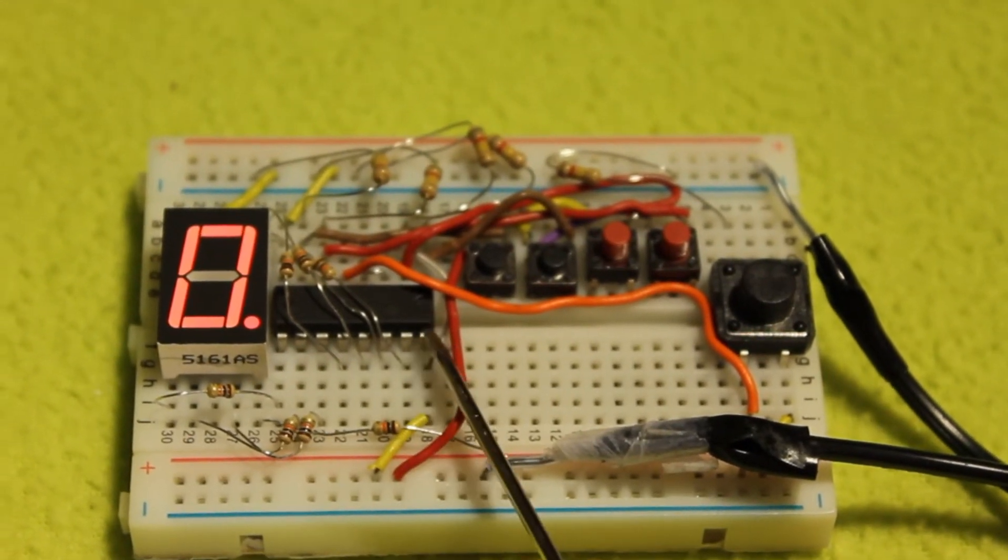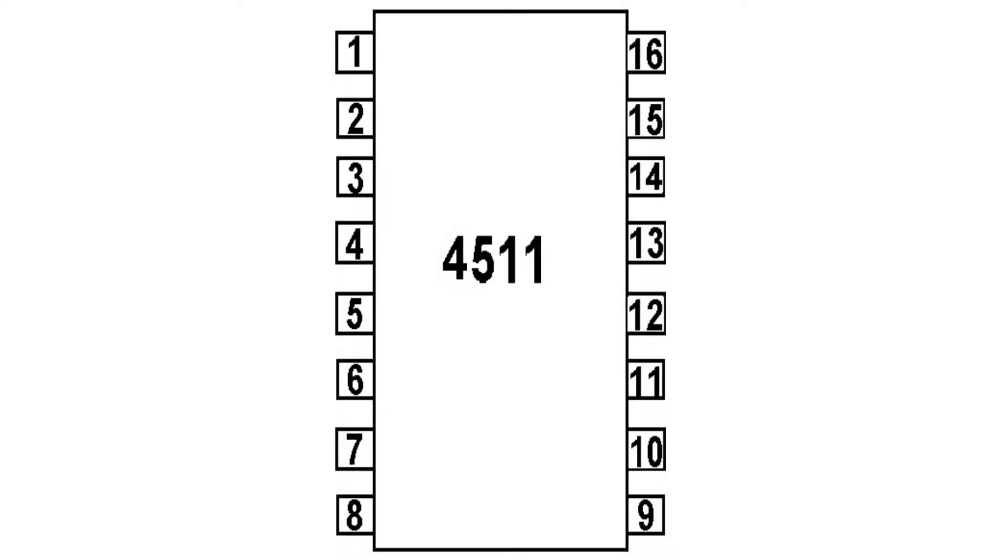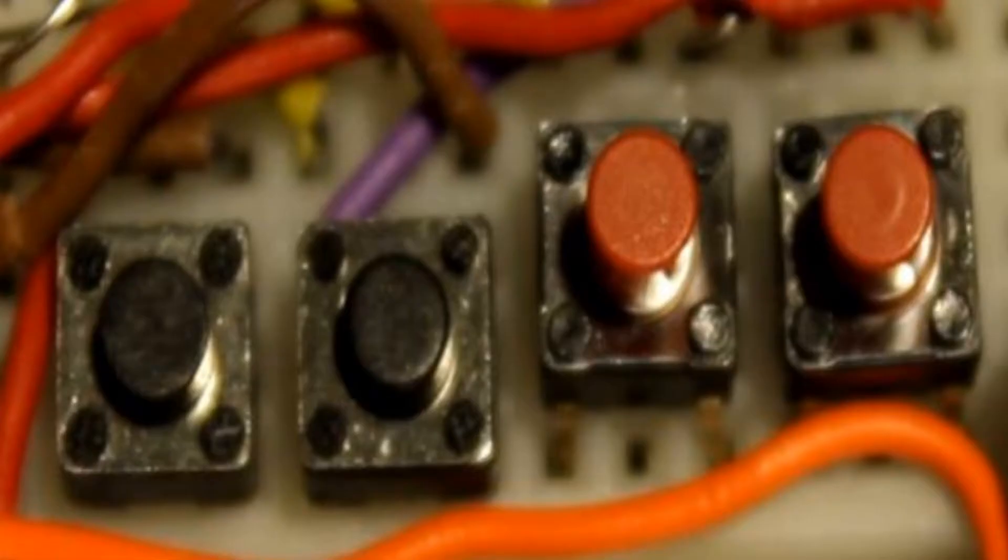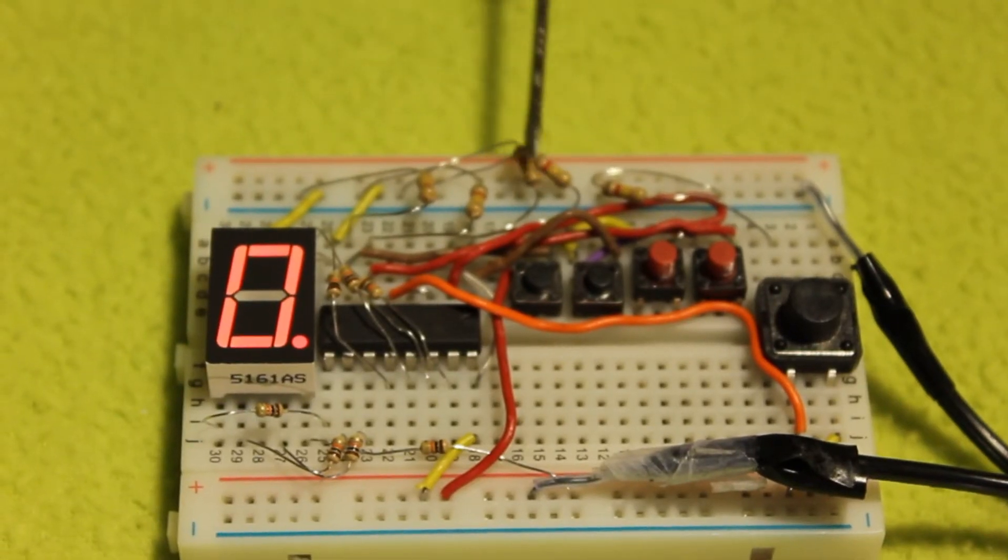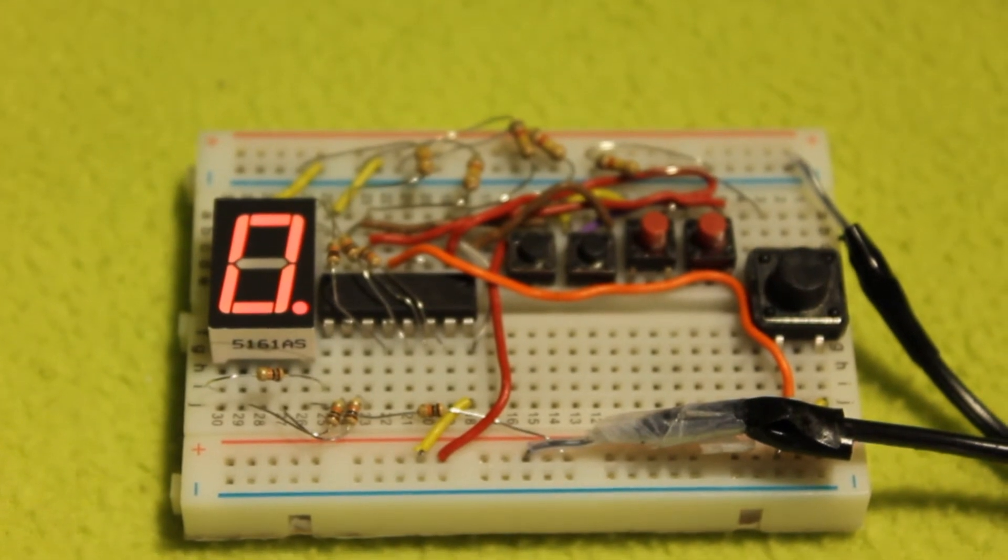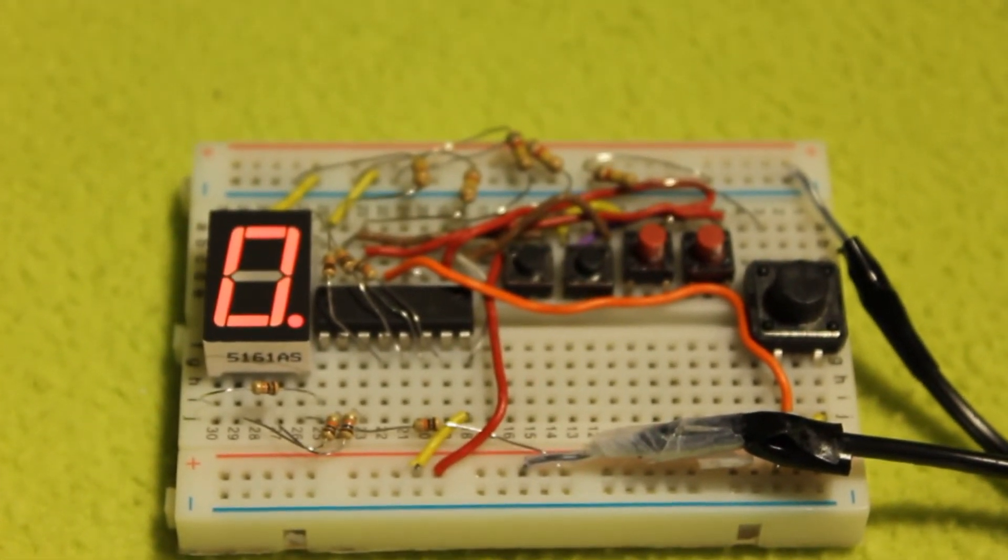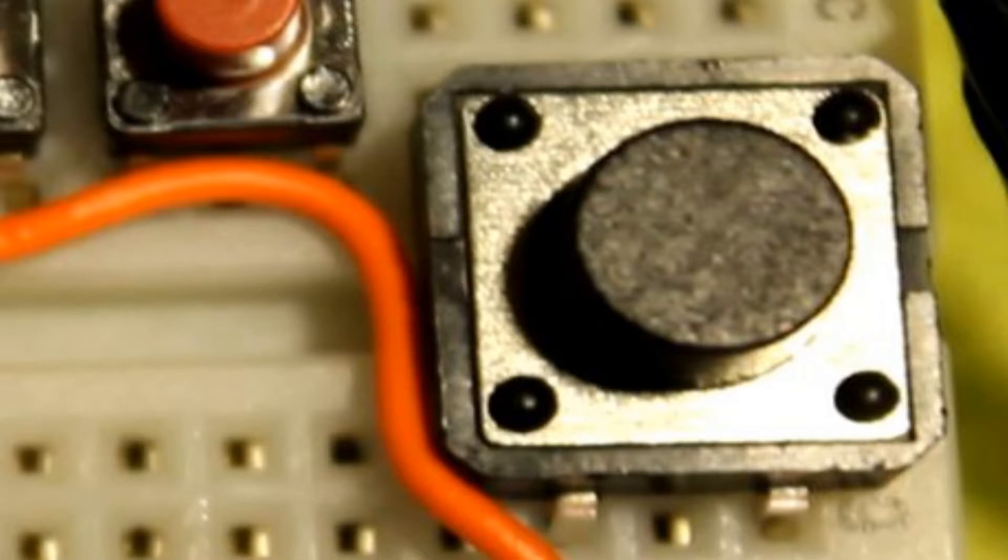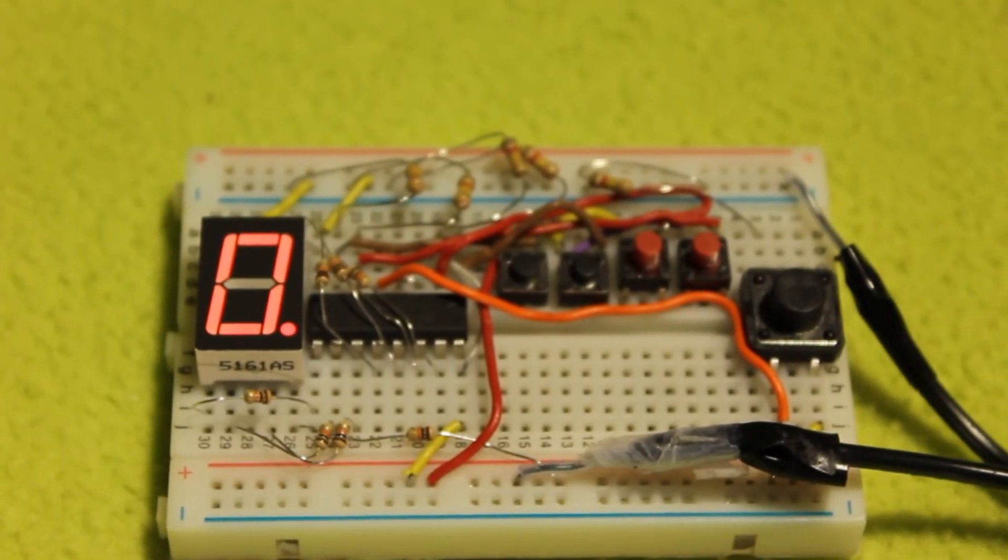Now here is the 4511 decoder and driver IC, and here are the four input push buttons, and here are their pull-down resistors so that when the buttons are not pressed down, the pins do not float. And here is the hold push button and here is its resistor.